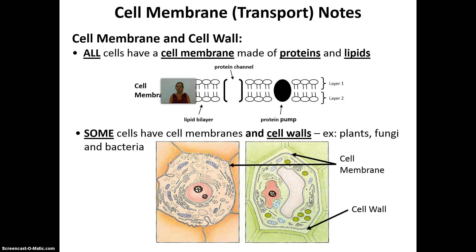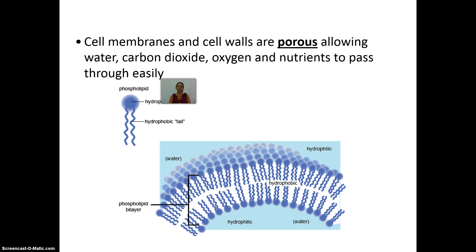The general structure of the cell membrane is a phospholipid bilayer made up of proteins and lipids. The cell membrane is porous, which allows water, carbon dioxide, oxygen, and nutrients to pass through it very easily. Those nutrients and molecules can wiggle their way through the phospholipid bilayer — that is what porous means.